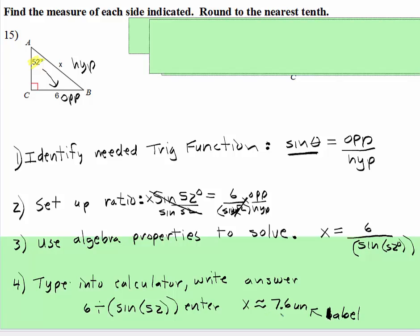This says round to the nearest tenth, so x is about 7.6 units. Even though on this paper itself they didn't say, every time that you are giving an answer and it's a distance or it's a measurement of some length, or area, or something, you always label it with a unit.